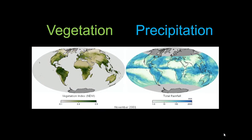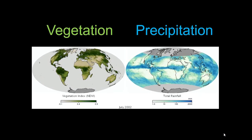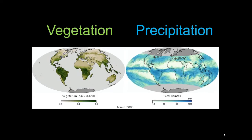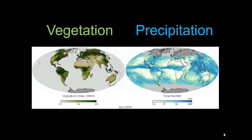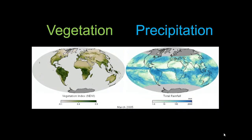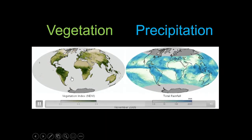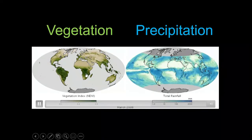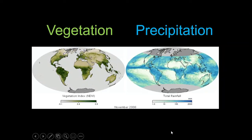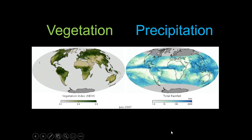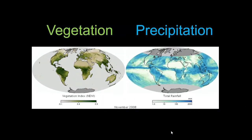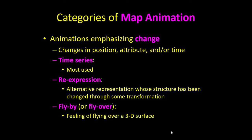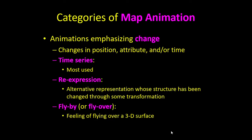Here's an example of synchronization: on the left is a map of vegetation and on the right is precipitation. When we synchronize them, we can clearly see relationships between vegetation and rainfall. By having them both show the same month and year, we create an animated map that compares two different variables side by side.